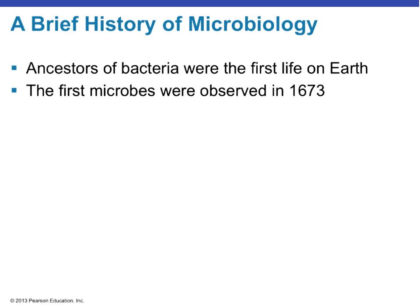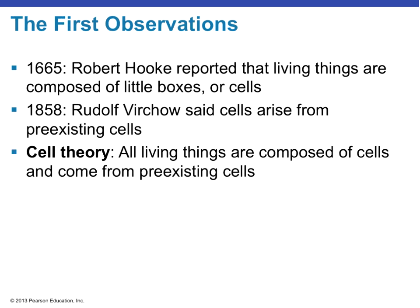Now let's talk about the brief history of microbiology — how we got to this discipline. Microorganisms are believed to have been the first life forms on Earth, here long before humans. However, we didn't develop an understanding or even see them until about 1673. In 1665, Robert Hooke reported that living things are composed of little tiny boxes — he coined the phrase 'cell.' He saw these box-like structures because he was looking at wine cork, made from tree bark, whose plant cells have cellulose cell walls.